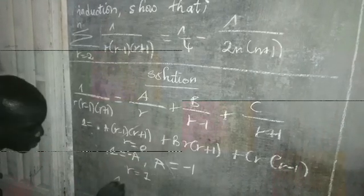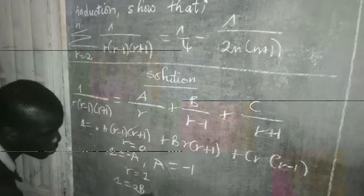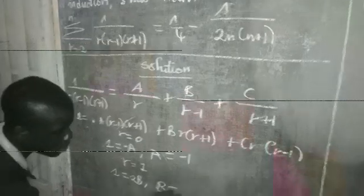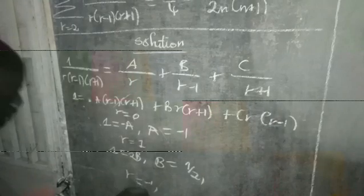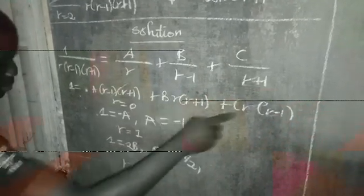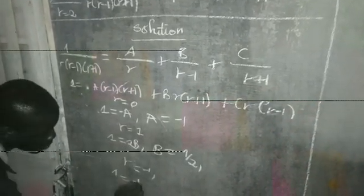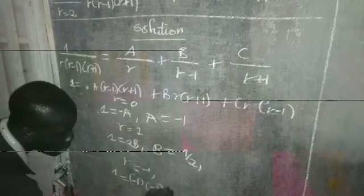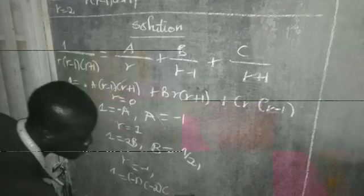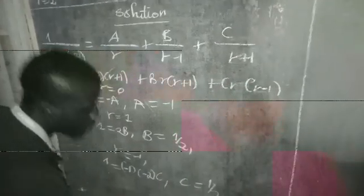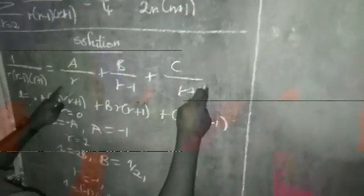Posing r equal to minus one, I am eliminating this one and this one. Having my values of a, b, and c, I now come to substitute in the expression containing the summation sign.